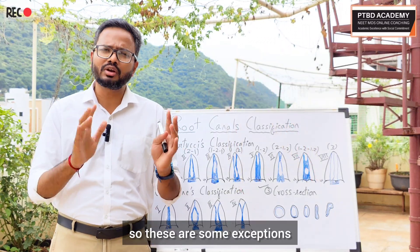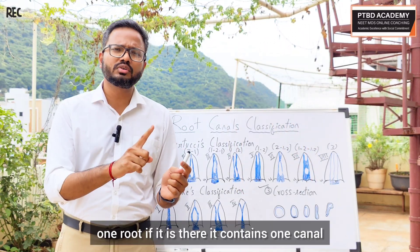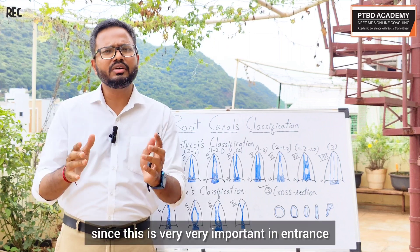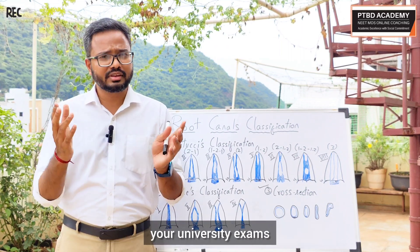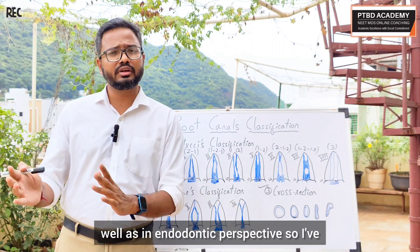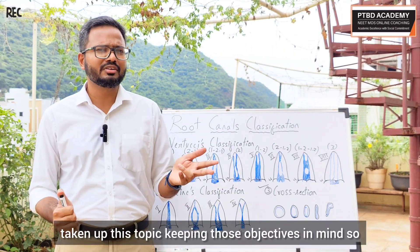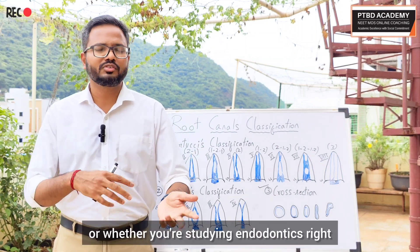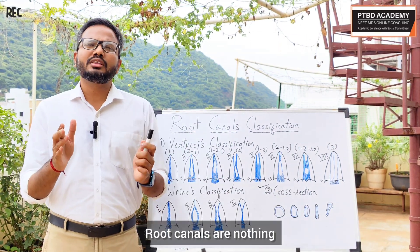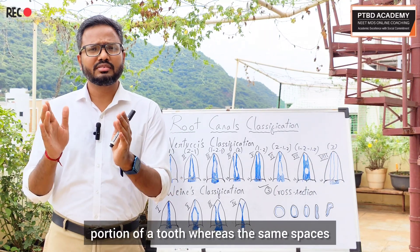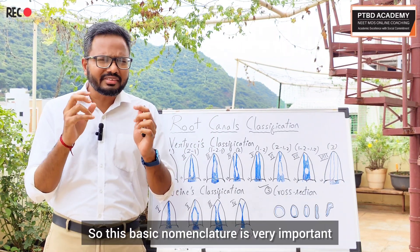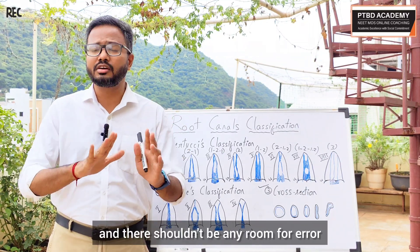The orientation of those canals — buccolingual — is very important. In the rest of the teeth, one root contains one canal. This topic is very important from the perspective of entrance exams, viva, and university exams. It is relevant both in dental anatomy and in endodontics. The basic nomenclature — root canal as pulpal space in the radicular portion, and pulp chamber as pulpal space in the coronal portion — must be clear with no room for confusion.